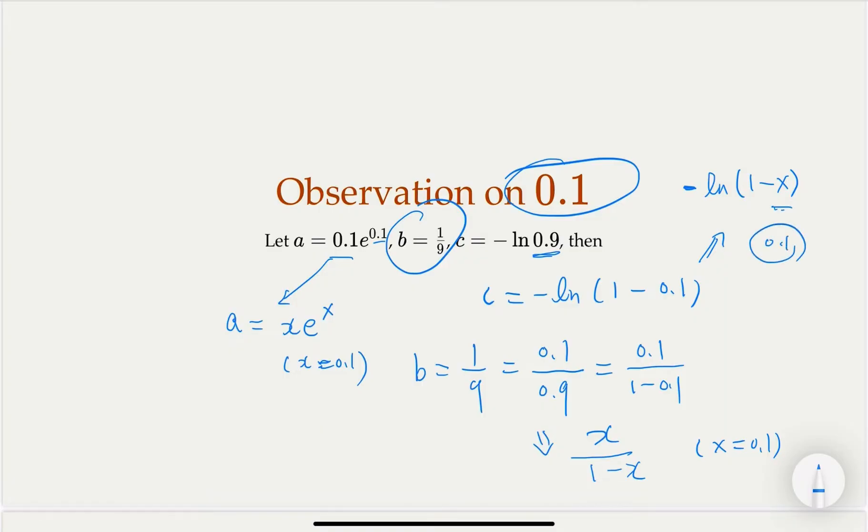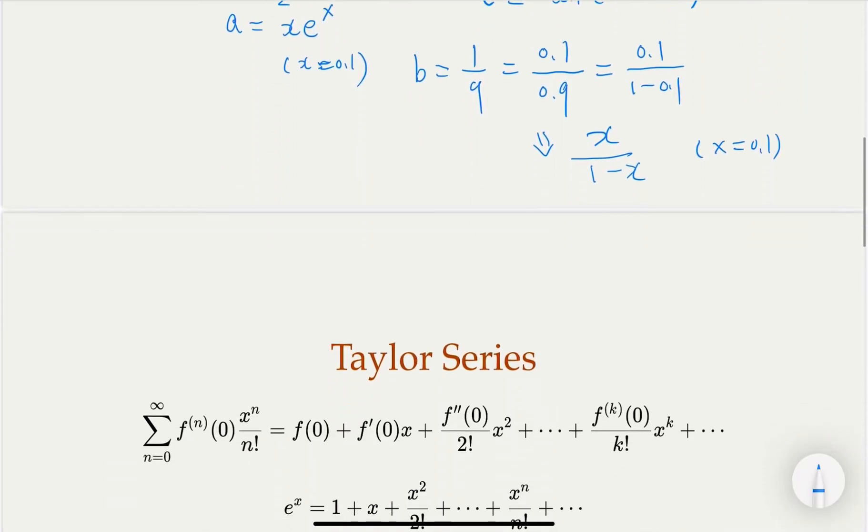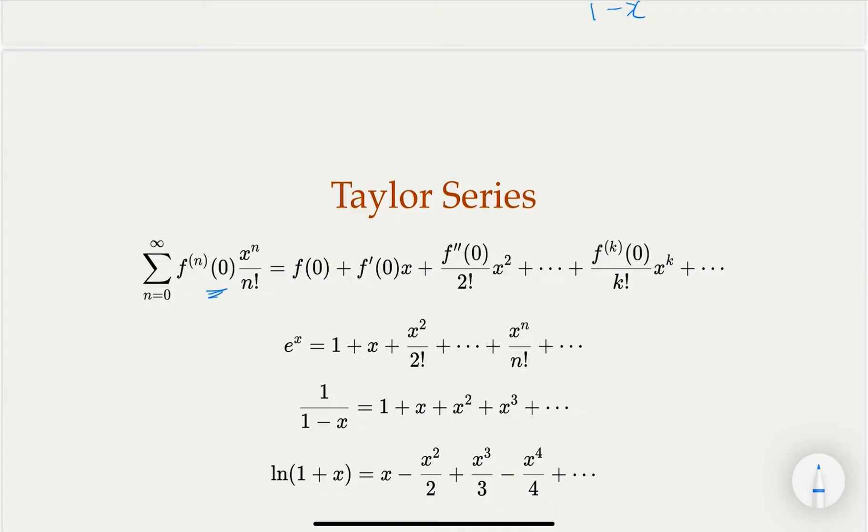So all these should remind you that you should try out a Taylor series expansion around, in this case, because 0.1 is very small, it's very close to x equals 0. So we can use the Taylor series around value 0. In general, the term is going to be this. Of course, for a different function, you may have what is called range of convergence. For example, for e to the x power, the range is probably all the real numbers.